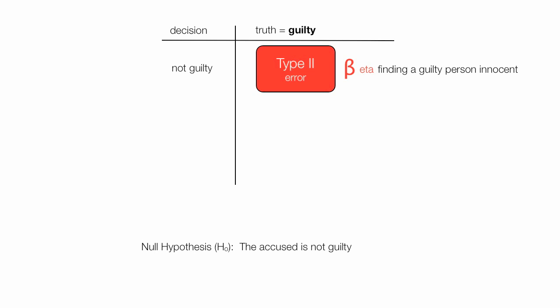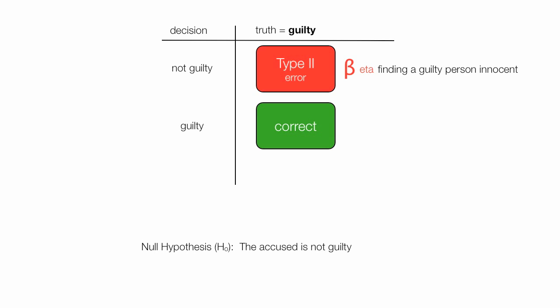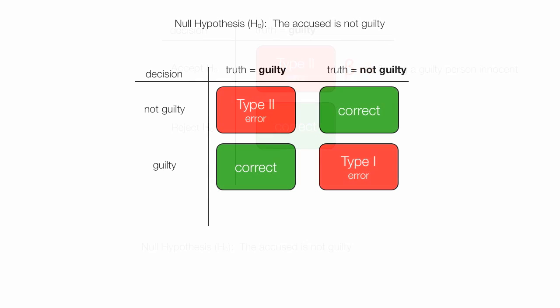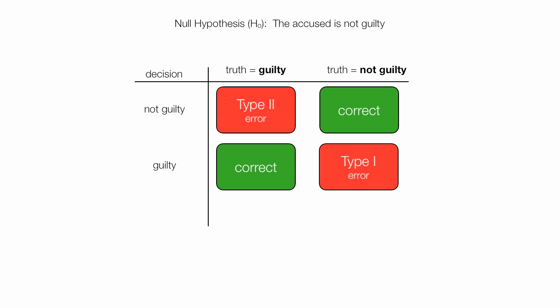That's the Greek letter beta — finding a guilty person innocent. On the other hand, if I find the person guilty because they are guilty, that's the correct decision, and I reject the null hypothesis. In this case, accepting the null hypothesis is a type 2 error, and rejecting it is the correct decision. In hypothesis testing, we try to avoid both type 1 and type 2 errors. Typically, type 1 errors are worse than type 2 errors — putting an innocent person in prison is bad.